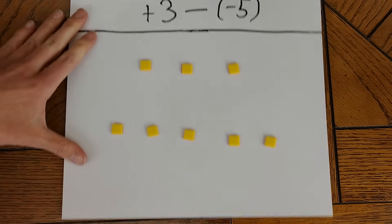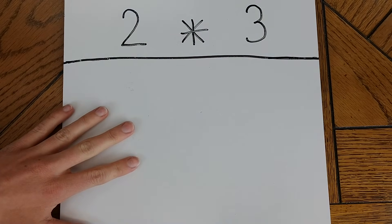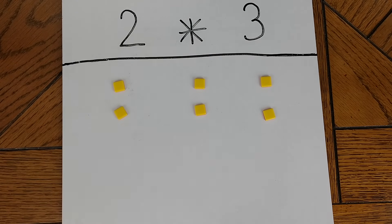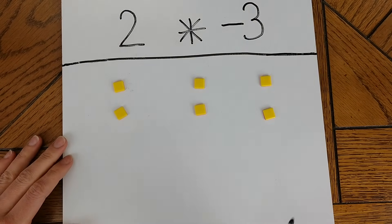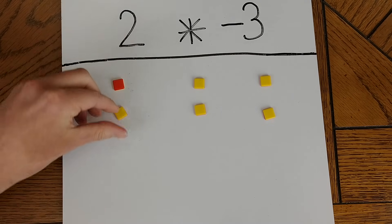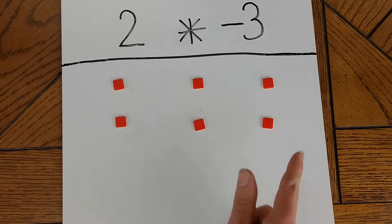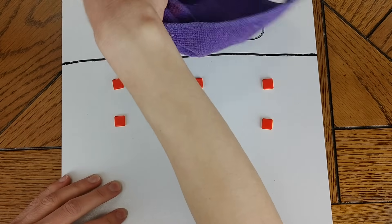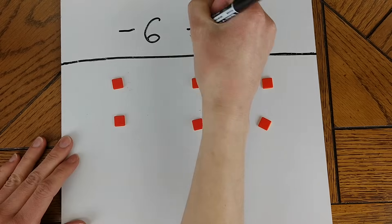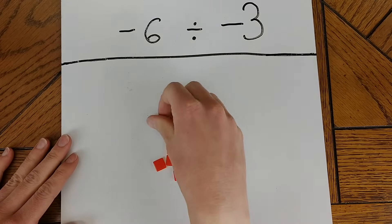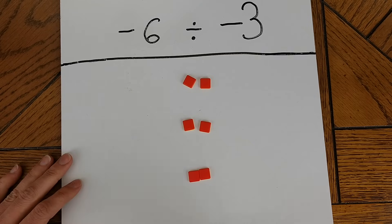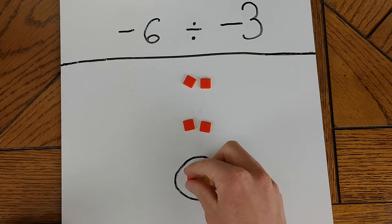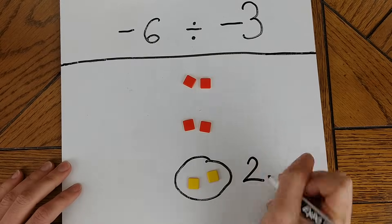Now let's talk about multiplication. I can represent a simple multiplication problem by taking a group of tiles and replicating it a given number of times. Now if my factor is negative, all I have to do is flip each tile over — in this case that's going to give me an answer of negative 6. This works for division as well. Let's say I want to take my negative 6 and divide it by negative 3. I'm going to take my negative 6 and divide it up into 3 equal groups, leaving me with 2 tiles in each group. Now because my divisor is negative, I need to flip over those tiles, and that's going to leave me with my final answer of positive 2.